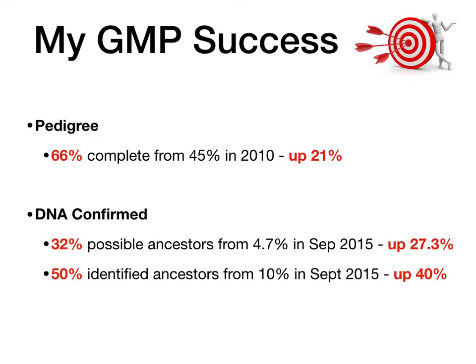That was only 4.7% of my possible ancestors over five years. But since I've been using Genomate Pro, I've had significant increases, and I believe that using Genomate Pro has enabled me to have these results. My pedigree is now up from 45% in 2010 to 66% — a 21% increase. My DNA confirmed ancestors: I now have 32% of my possible ancestors confirmed, up from 4.7% in September 2015, and that equates to 50% of those I've identified, compared to 10% in September 2015.